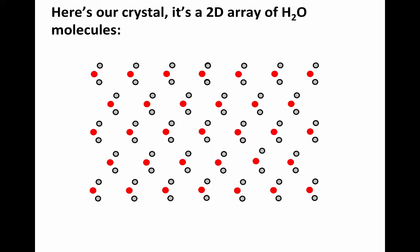So to begin, let's start by setting up a simple crystal. We've got a 2D array of water molecules where the oxygen is shown in red and the hydrogen is shown in gray.